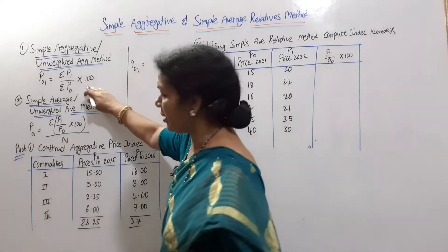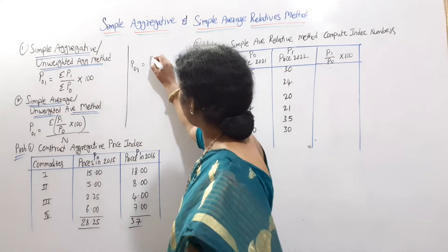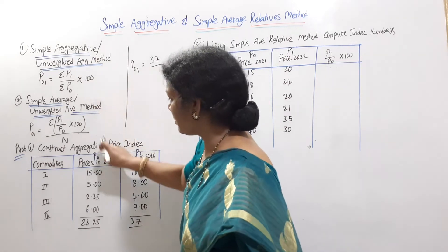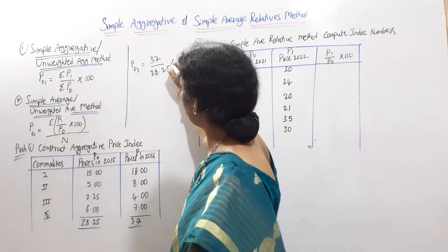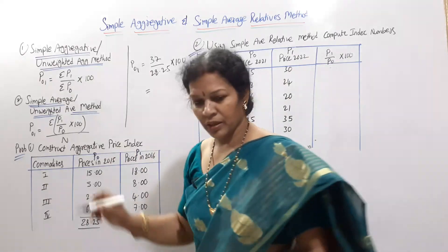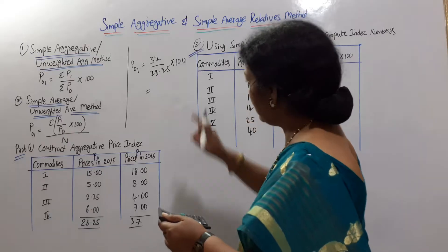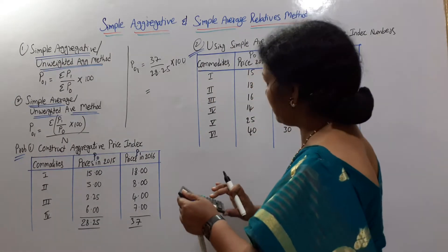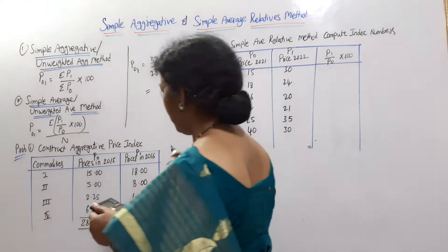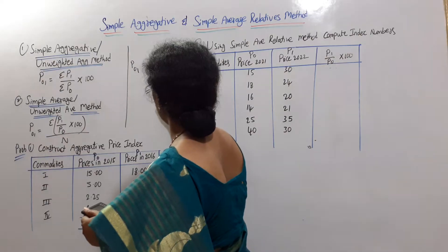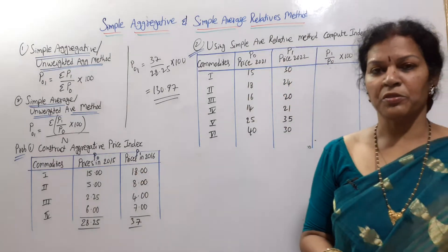P01 formula is already written. Sigma P1 total is 37, divided by sigma P0 which is 28.25, into 100. That is 3700 divided by 28.25, which equals 130.97. This is the answer as per the simple aggregative price method.